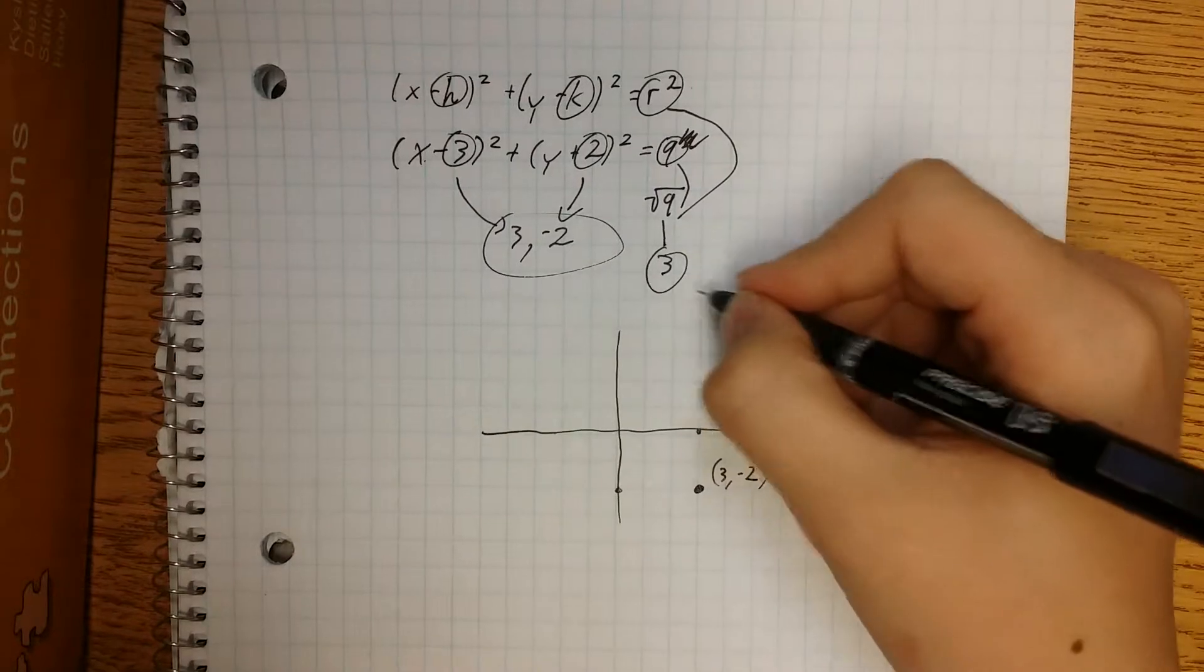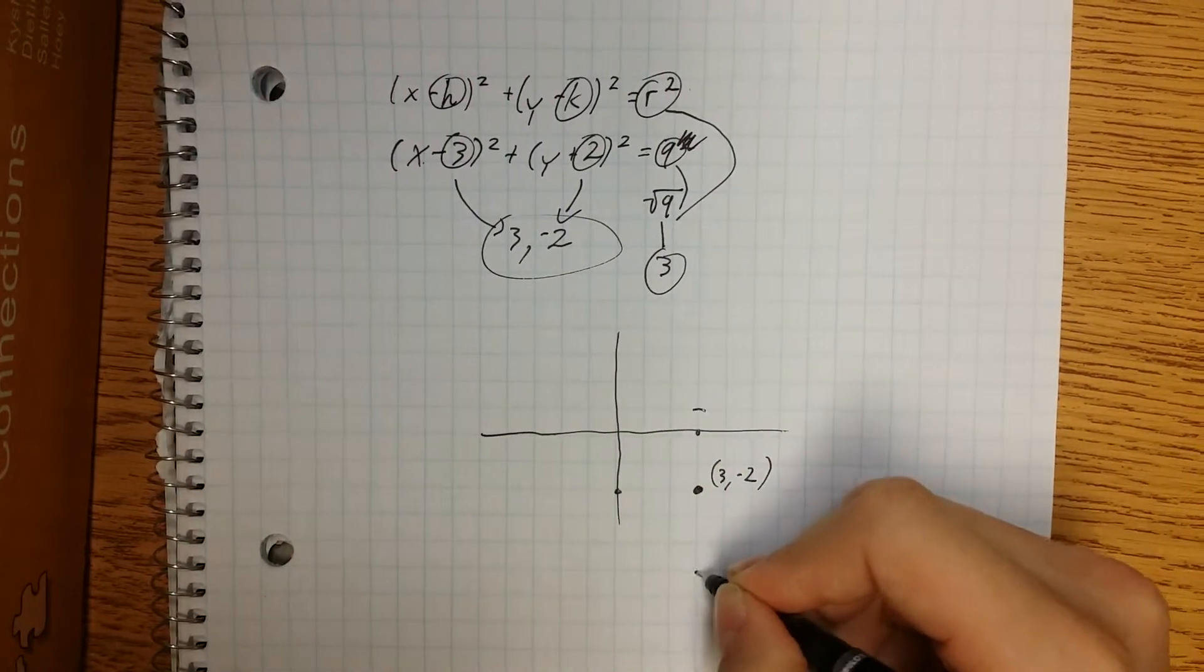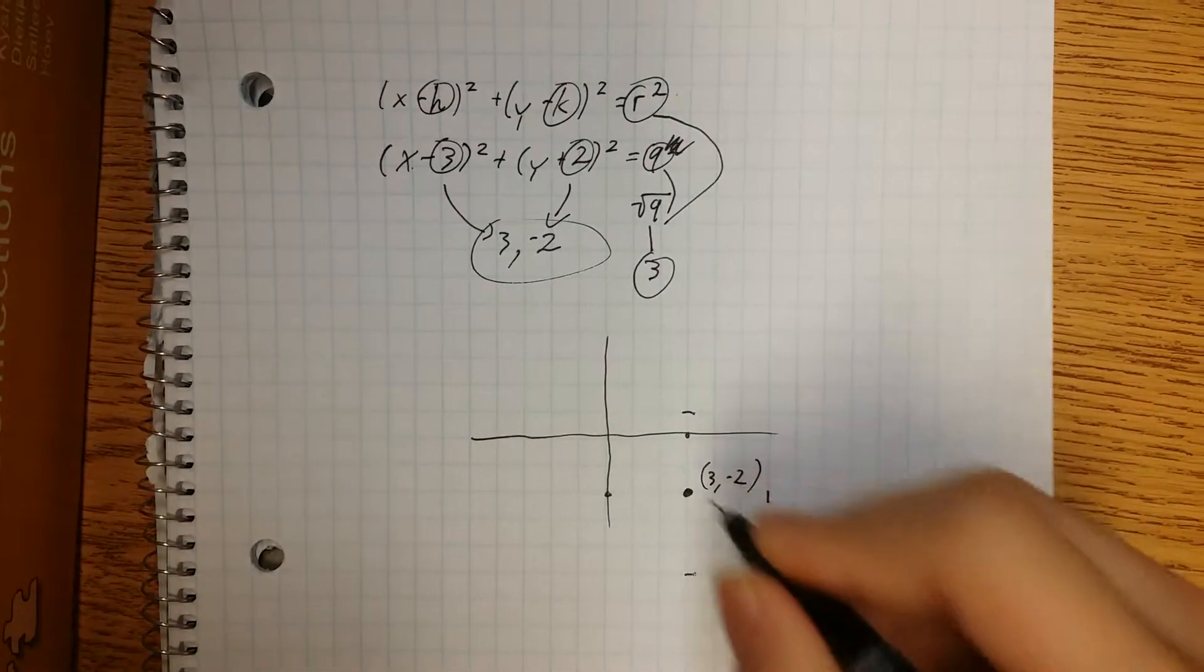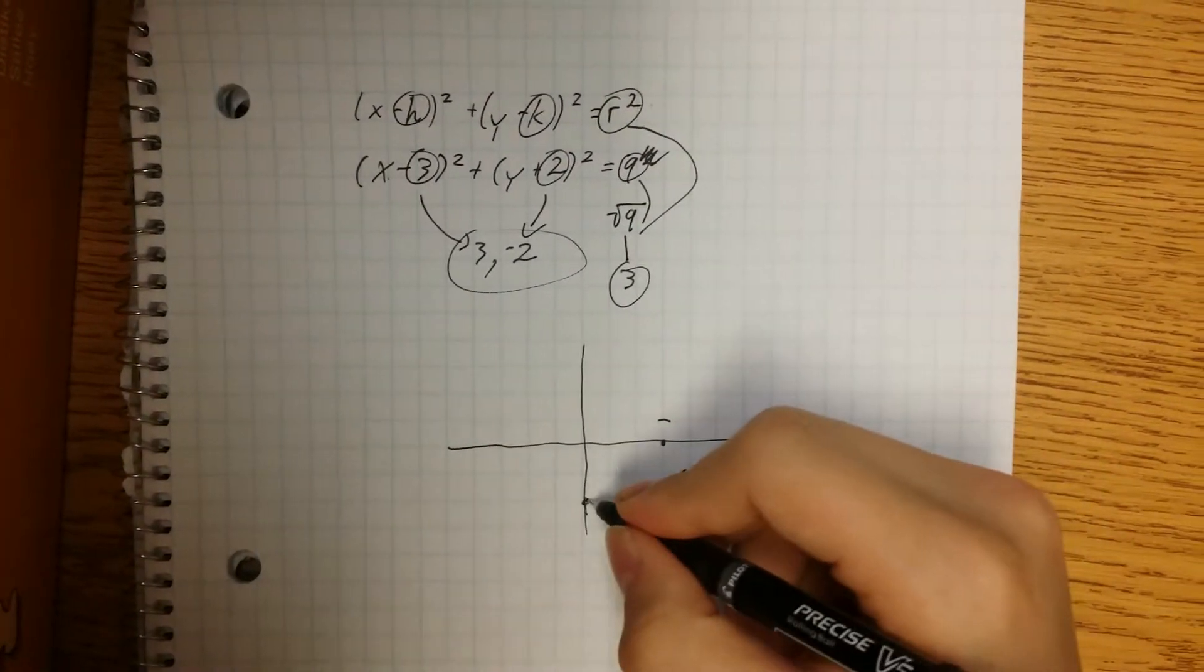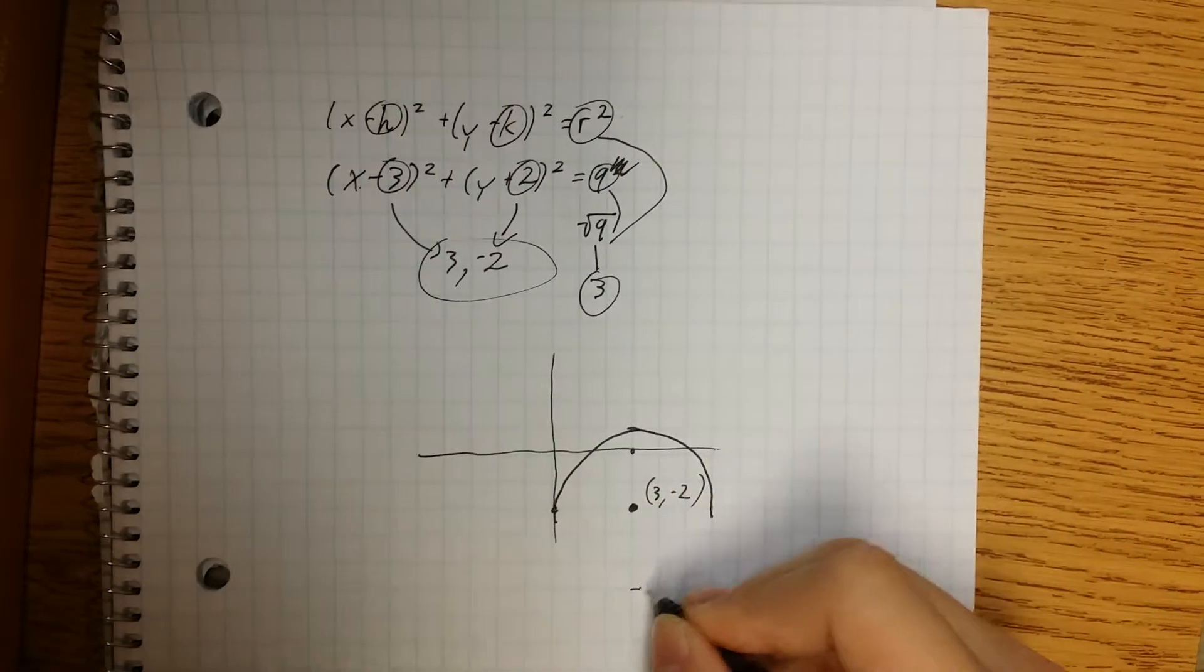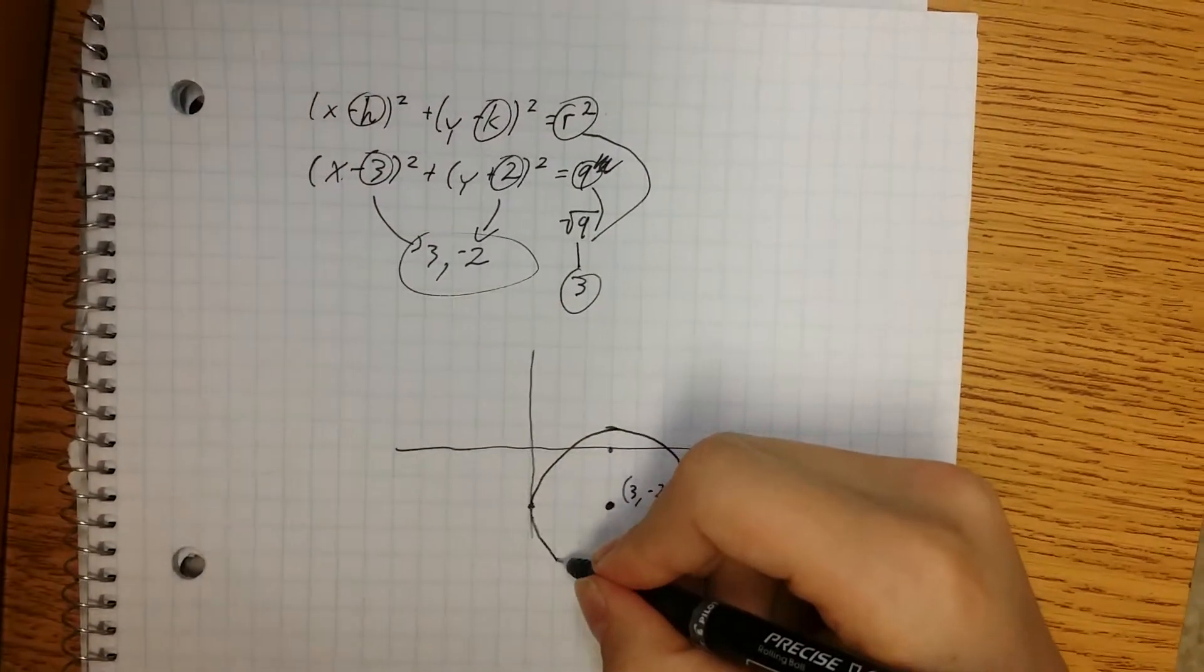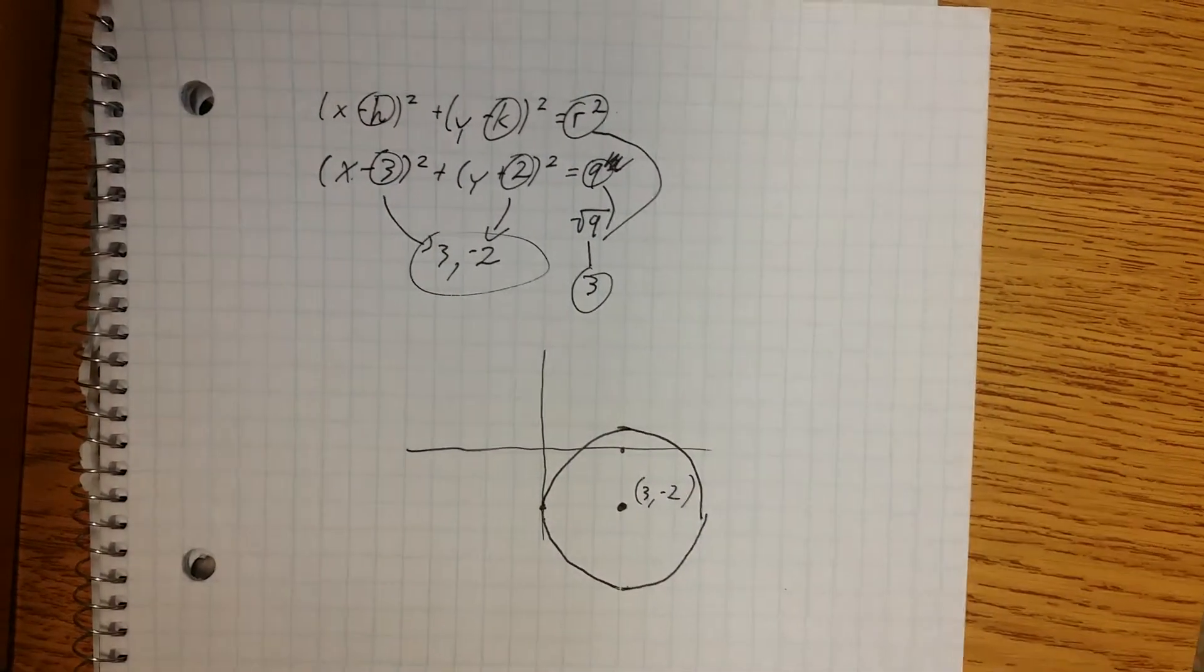It has a radius of 3, so 3 from there is there, and there, and there. Now you just connect the dots. And if you're really good at drawing, you can actually draw circles. That's how you do it.